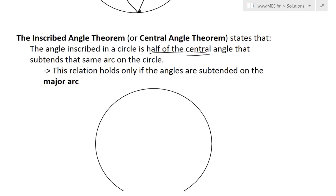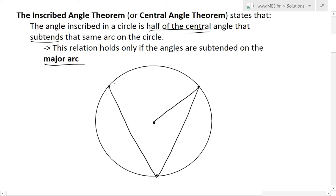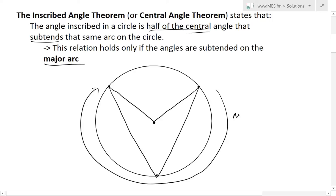I'll go over what a central angle is. This relation holds only if the angles are subtended on the major arc. So basically, if you have an angle subtended here, the center of this circle is right here. The central angle is basically subtended on this same arc — on these same points, we draw it across to the center. The major arc is basically the arc that is bigger than the small one. Whenever you have these two angles subtended, this is the major arc across. And then this is the minor arc right here.